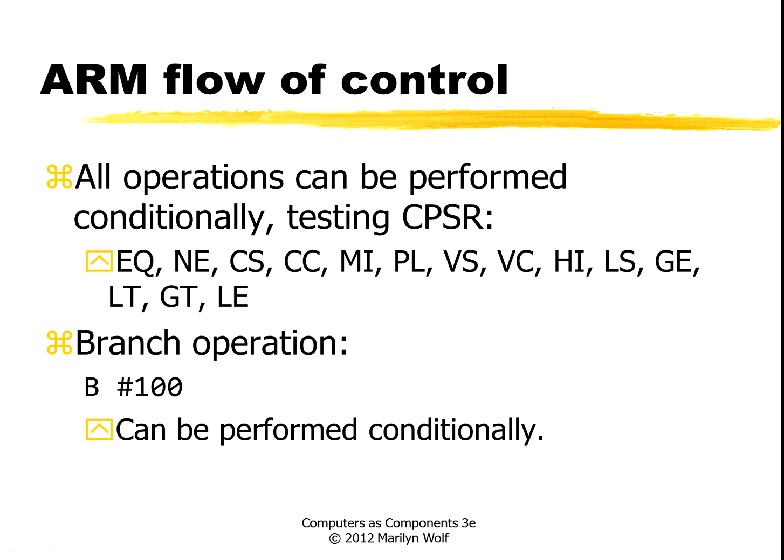We have a branch operation that allows us to perform a jump. This is an unconditional branch. But all we have to do is append these flow-of-control conditionals to the branch and now we have conditional branches. So the same mechanism used to make an add operation conditional is also used to make a branch conditional.